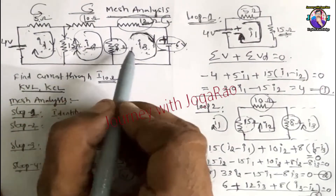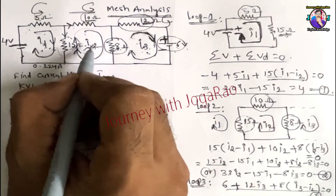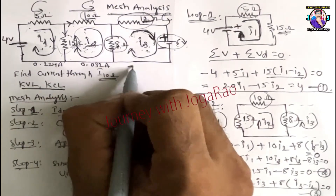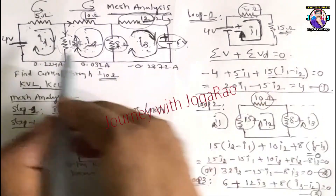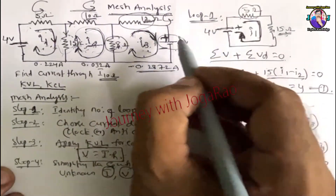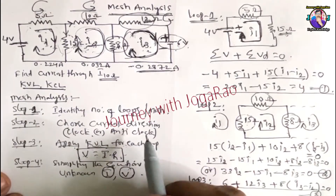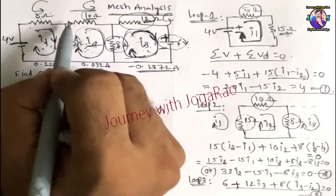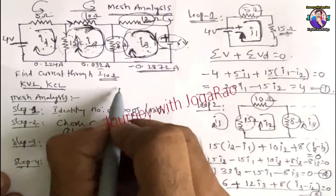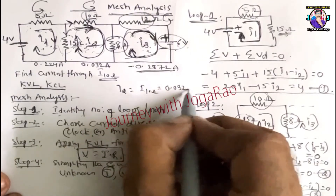So the results are: I1 = 0.224 amperes, I2 = 0.032 amperes, I3 = −0.2872 amperes. The negative value of I3 means the actual current direction is anti-clockwise. The question asks for the current through 10 ohms — the 10 ohms resistor is directly in loop 2, so I10 = I2 = 0.032 amperes.